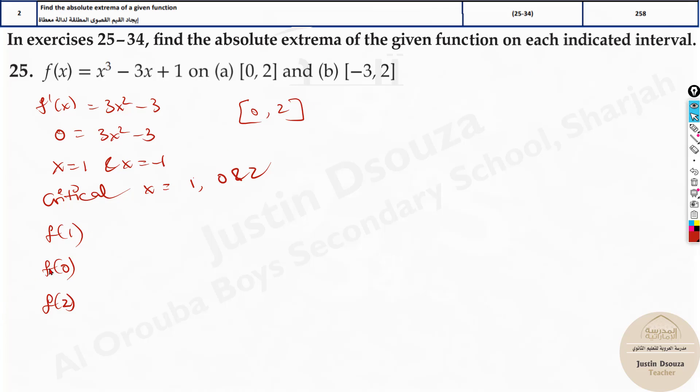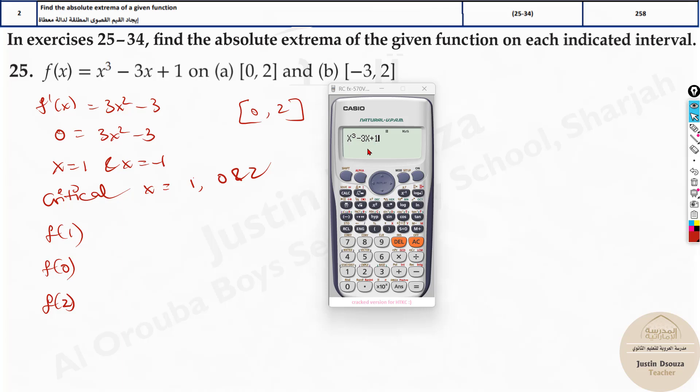Let's take our calculators and find the max and minimum points. All you need to do is type in this equation and calc at all these values. Calculating 1 gives minus 1, at 0 we get 1, and at 2 we get 3. This is absolute minimum and over here we get maximum.